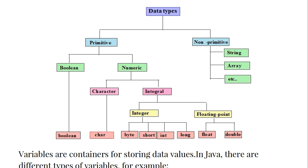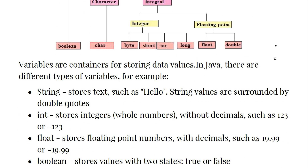Here is a quick summary of data types in Java. Primitive types include boolean and numeric. Boolean is true or false. Numeric includes character (like a, b, c), integral which is whole numbers (like 1, 2, 13, 1000), and floating point (like 15.7 or 72.6) which may be float or double. Non-primitive includes string, array, and more.